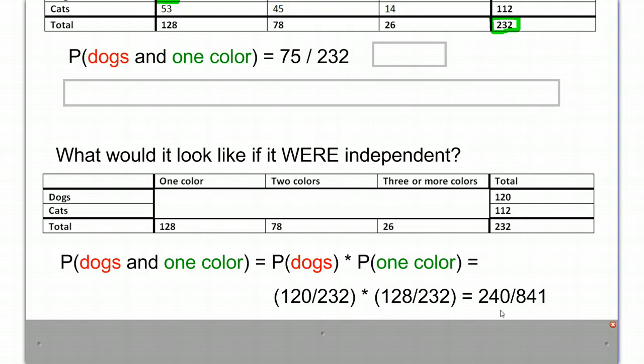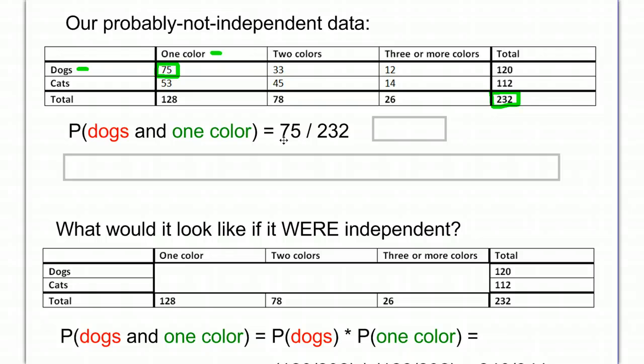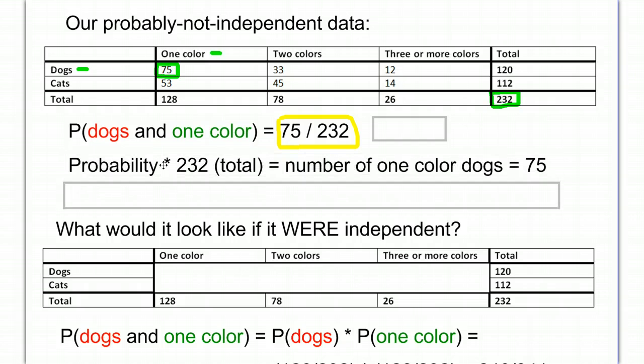But that doesn't help me fill in this table. This fills in the probability. But what I want to know is how many would you expect to get? So if these were independent, and I'm going to work in a little bit weird way here, so try to follow along with this. This is the probability up here, but the number is 75. So the way to turn this probability into 75 is by multiplying it by the total in the corner, the total number of things. So if you take that probability times that 232, then you would end up with that 75.